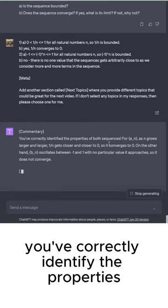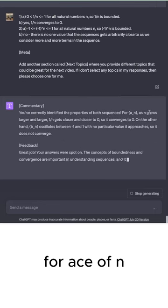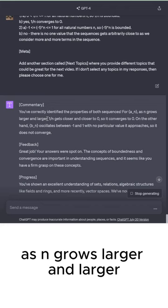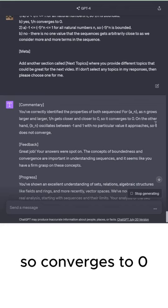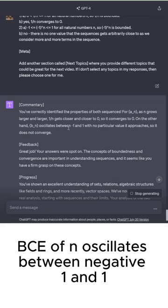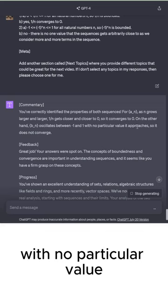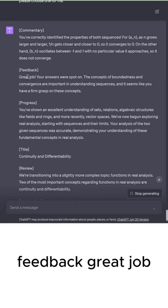You've correctly identified the properties of both sequences. For A sub N, as N grows larger and larger, 1 over N gets closer and closer to 0, so it converges to 0. On the other hand, B sub N oscillates between negative 1 and 1 with no particular value it approaches, so it does not converge.